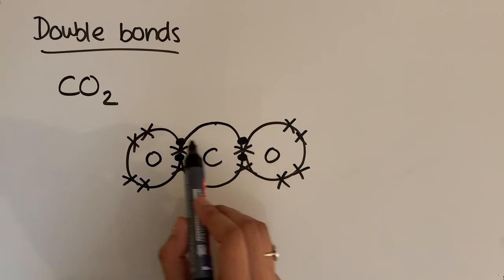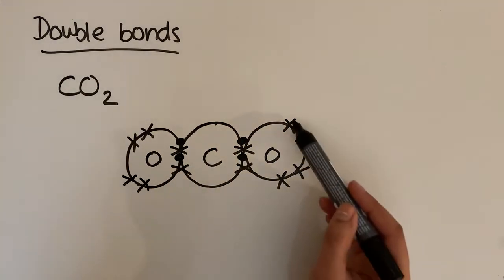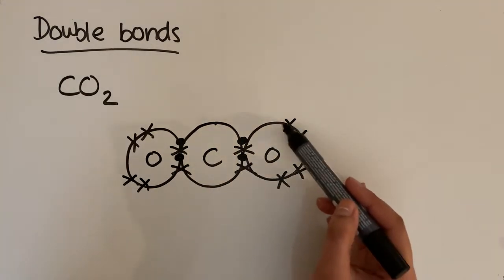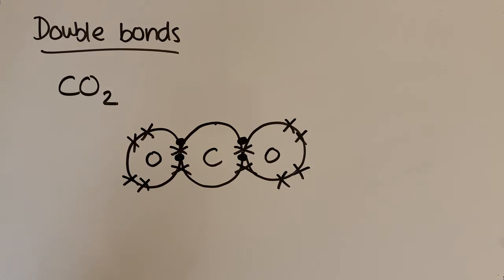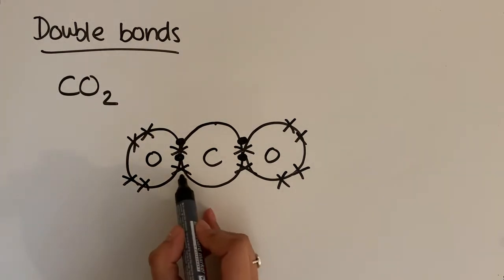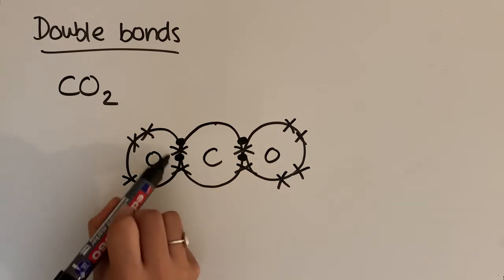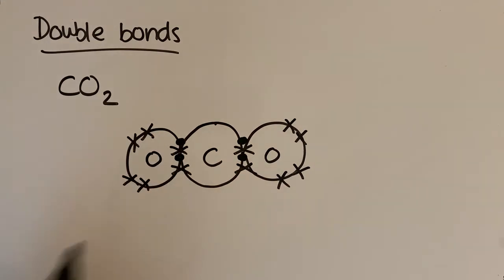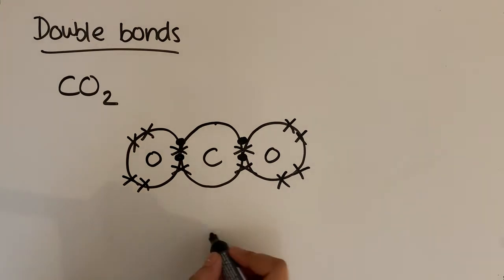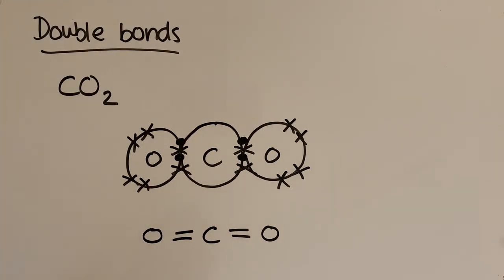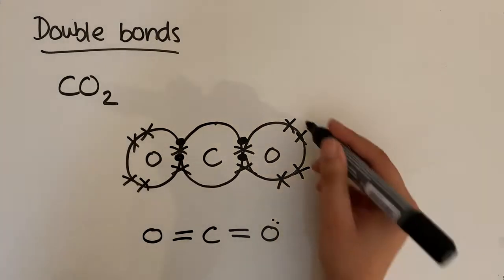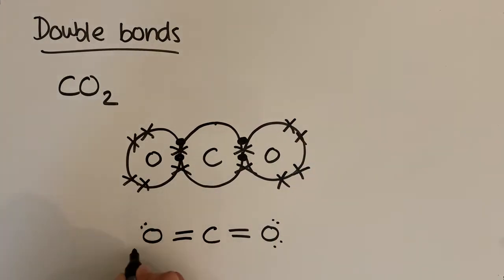Checking the result: this oxygen has eight electrons, carbon has eight electrons, and the other oxygen also has eight — so everything's happy. There's a double bond between the carbon and each oxygen — two pairs of electrons shared on each side. If we draw in the lone pairs, each oxygen has two lone pairs, and carbon has no lone pairs.